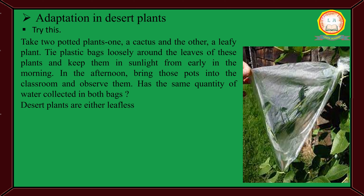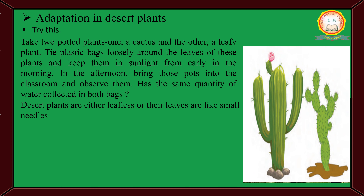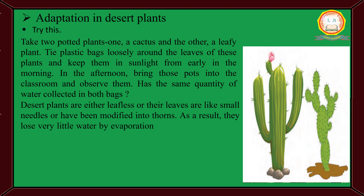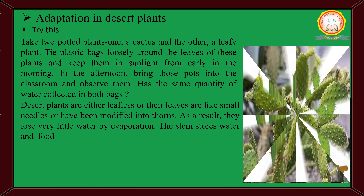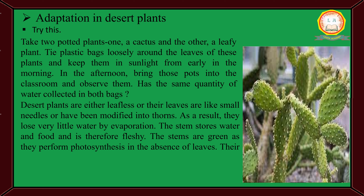Desert plants are either leafless, or their leaves are like small needles, or have been modified into thorns. As a result, they lose very little water by evaporation. The stem stores water and food and is therefore fleshy. The stems are green as they perform photosynthesis in the absence of leaves.